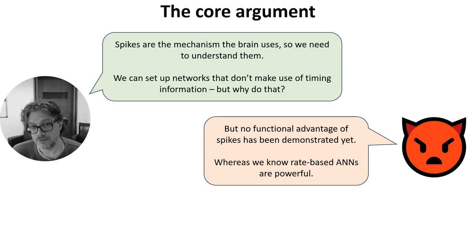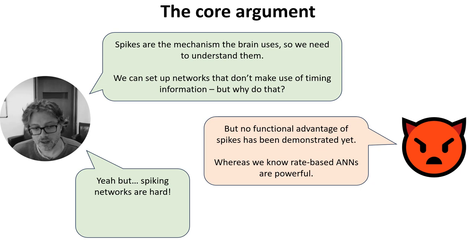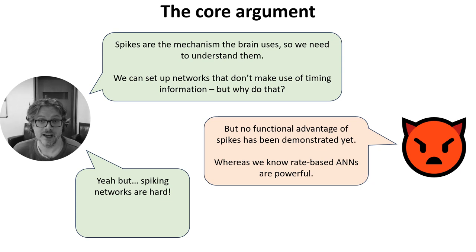If spike times are carrying all this potentially useful information and rich dynamical behavior useful for computation, how come we've never managed to demonstrate a case where spiking performs better than non-spiking? We know that rate-based artificial neural networks are powerful, but we can't yet say the same about models of spiking neural networks. Training spiking neural networks is making great strides, but we're still far from the level of performance of ANNs. Part of the reason for that is that we have good theory and techniques for working with continuous and differentiable systems, and not as good yet for hybrid, discrete, and continuous systems. That's a limitation on our mathematical techniques, but there's no reason the biological mechanisms of the brain should have the same constraints.